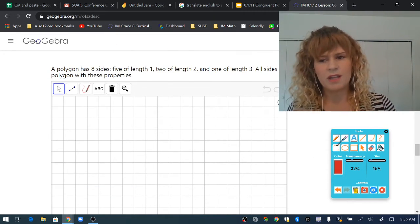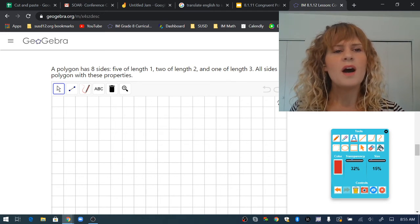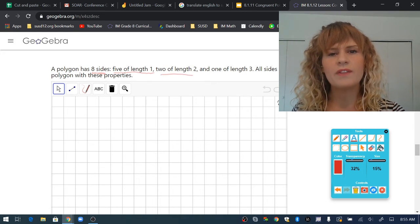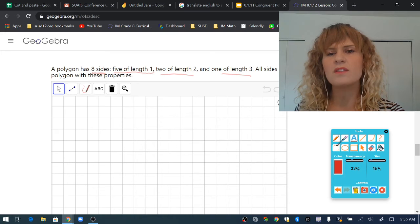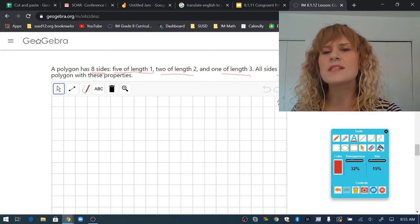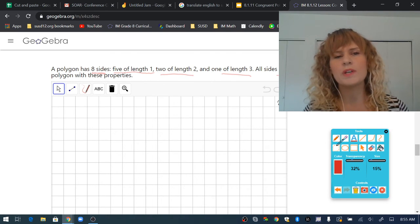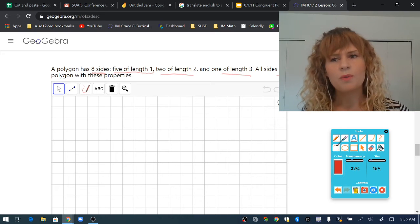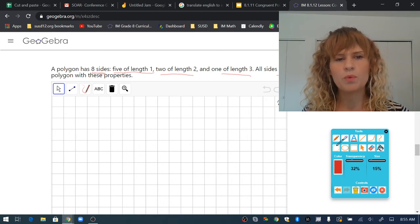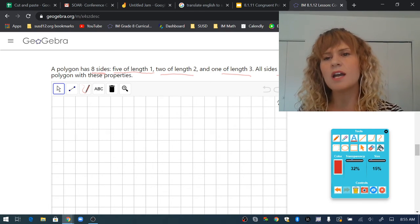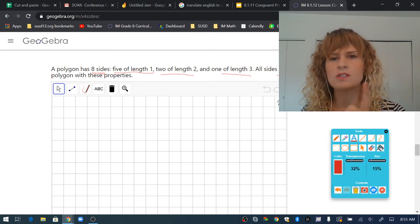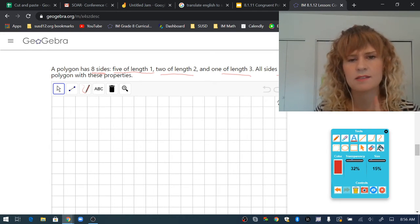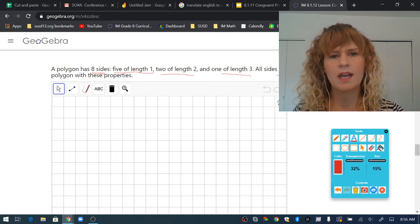Read the directions carefully. A polygon has eight sides. Five of length one. Two of length two. And one of length three. All sides lie on grid lines. Create a polygon with these properties. It says on grid lines. That means no diagonal lines. Everything is on the grid lines.